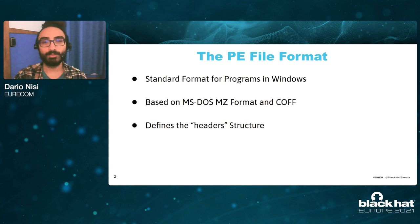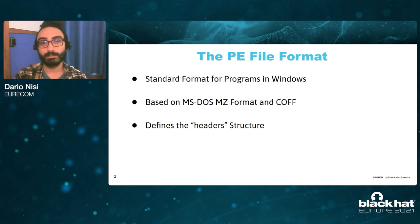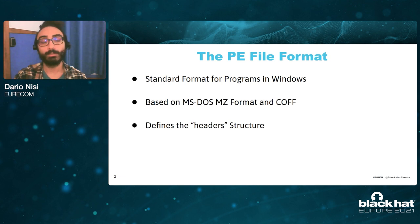As the title may suggest, today we are going to talk extensively about the PE File Format, so I think it's worth to give a little bit of background about it. The PE File Format is de facto standard for programs in Windows, and it is based on the old Microsoft DOS MZ and the COFF file formats. The PE File Format defines the headers, which are data structures that we find at the beginning of each program for Windows.